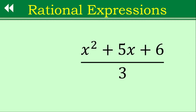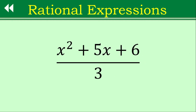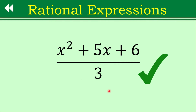Let's continue. How about this example — is this a rational expression? The answer is yes, definitely a yes. Because in the numerator we have a polynomial, and in the denominator we have a constant. This constant is still considered a monomial, and that's why this one is an example of a rational expression.